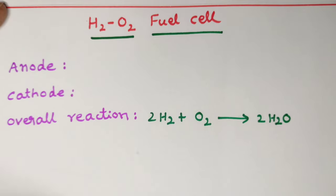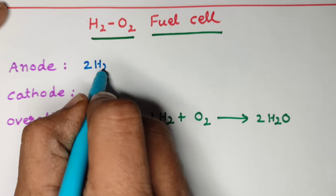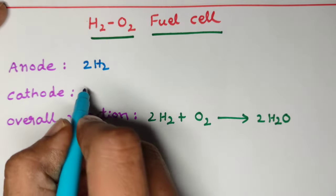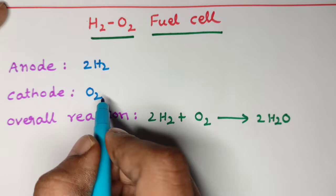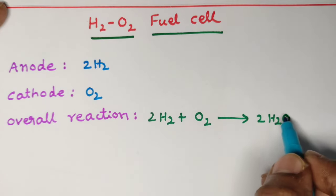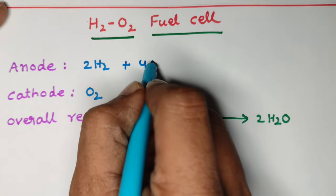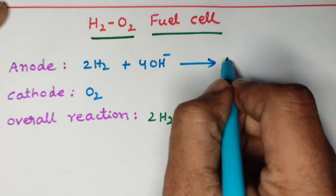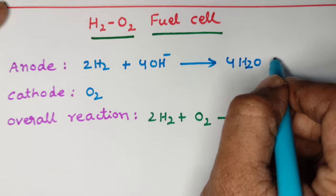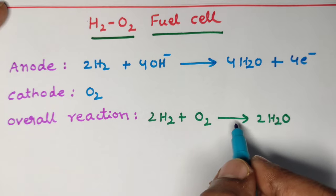Now let us take the anode reaction. At the anode we have 2H₂, and at the cathode we have O₂. Water is made up of H⁺ ions and OH⁻ ions. With four hydrogens present, we take four moles of OH⁻ ions, and four hydrogens plus four OH⁻ ions give four moles of water, while losing four electrons.